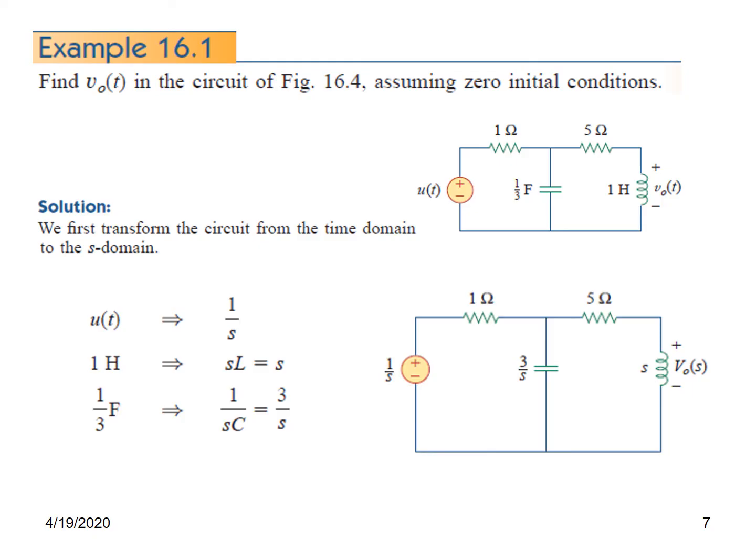The inductor will become sL and since L is 1 here it will be s. So this 1 Henry inductor will be simply s. The voltage across this inductor will be in Laplace domain V0(s). Coming to the capacitor, 1 over sC is the capacitor without zero condition. Here C is 1 over 3 so it will become 3 over s. No change in the resistor. So this is our circuit now in Laplace domain.